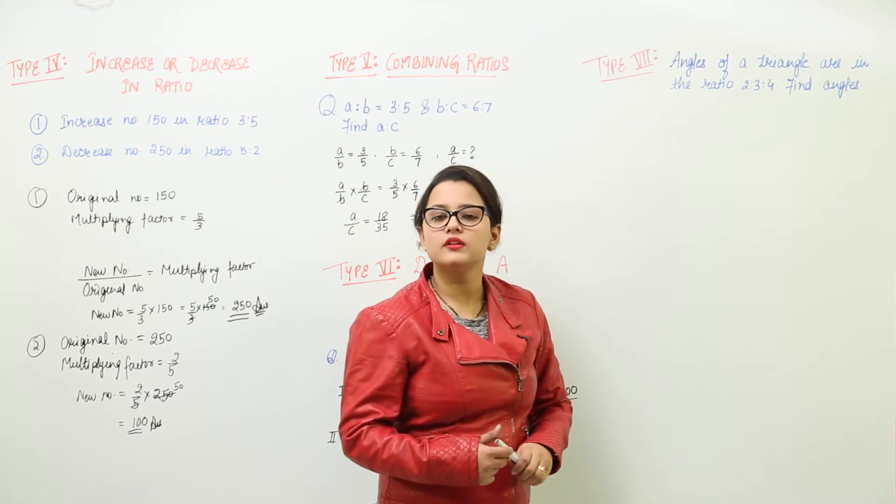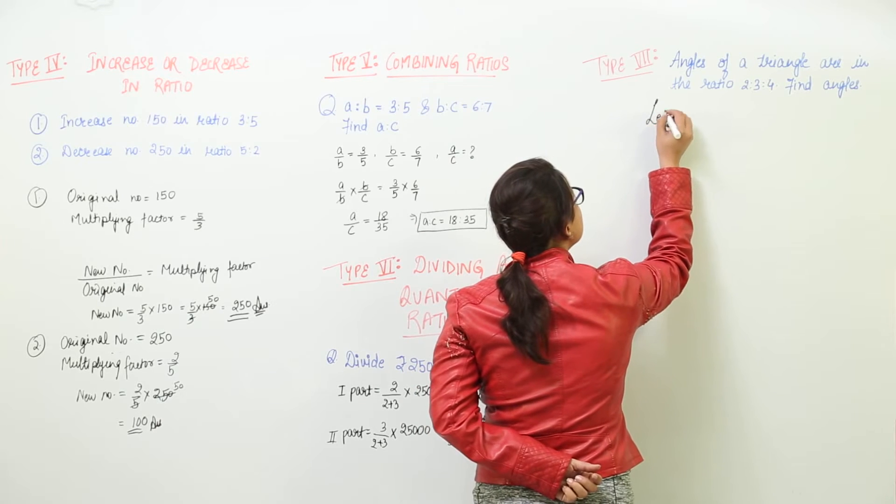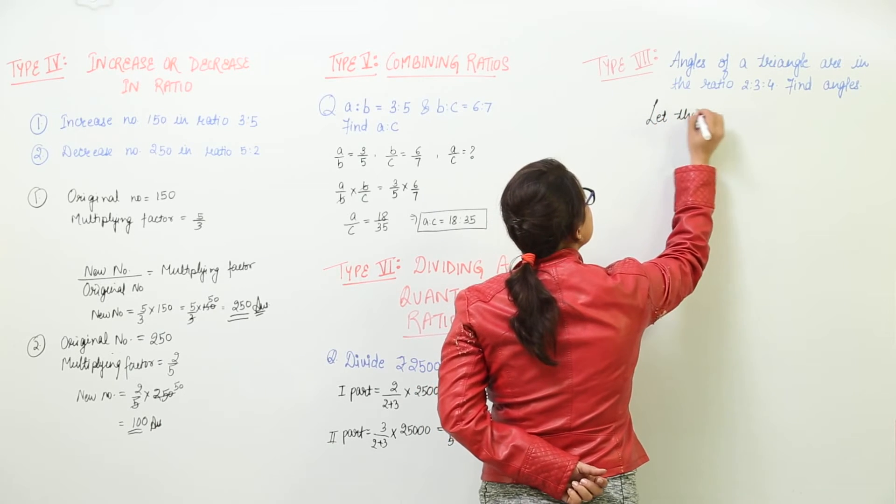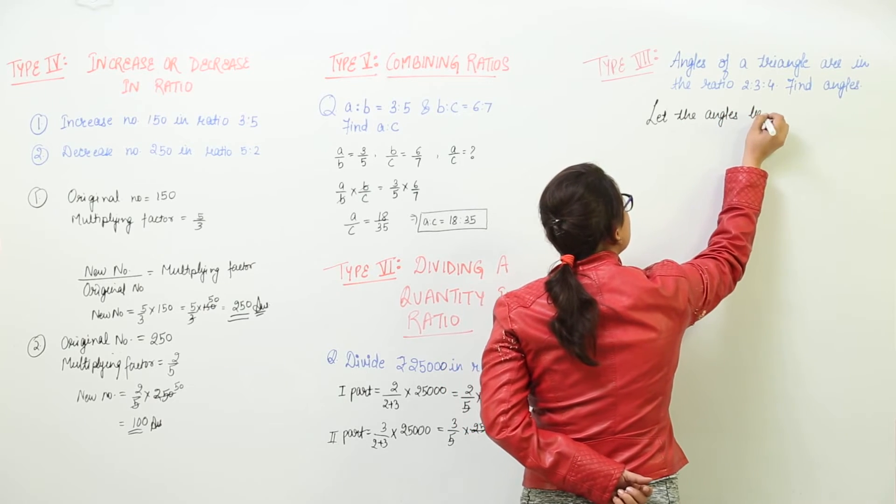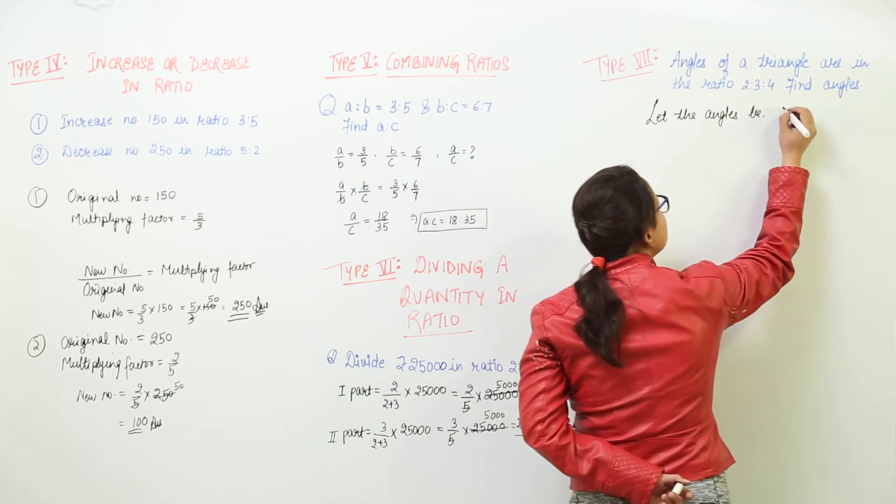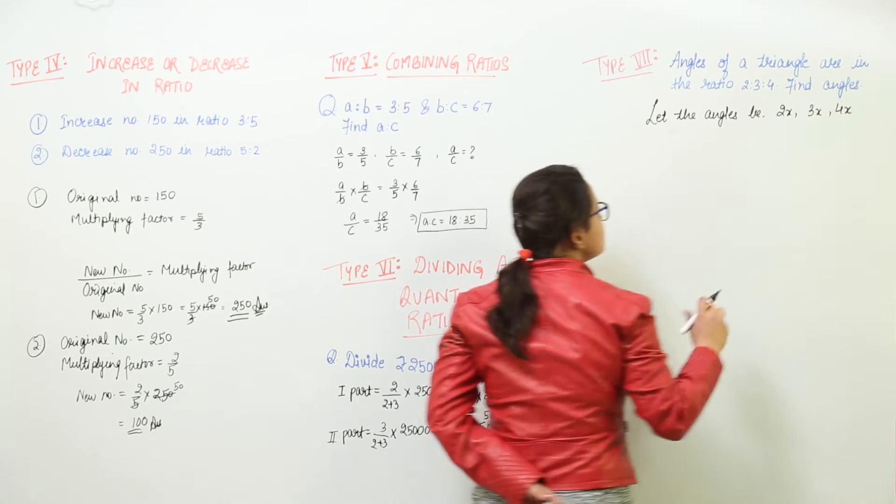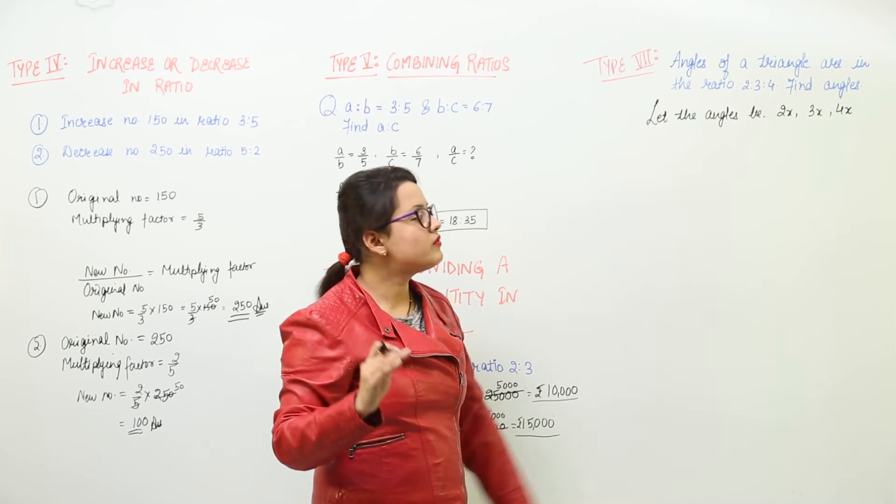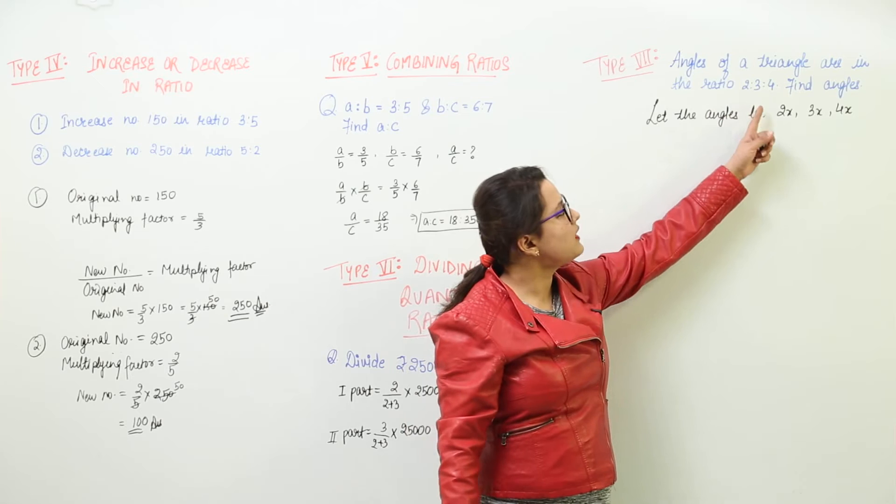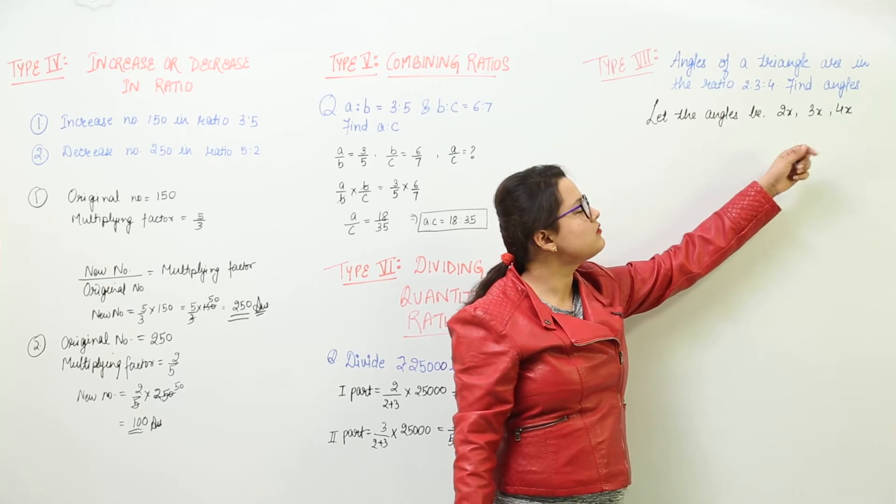We have to find all three angles. So before moving forward, we should assume the angles to be in the form 2x, 3x, and 4x because they are in the ratio. There must be some angle value to which this ratio corresponds, right? So the angles can be written as 2x, 3x, and 4x.